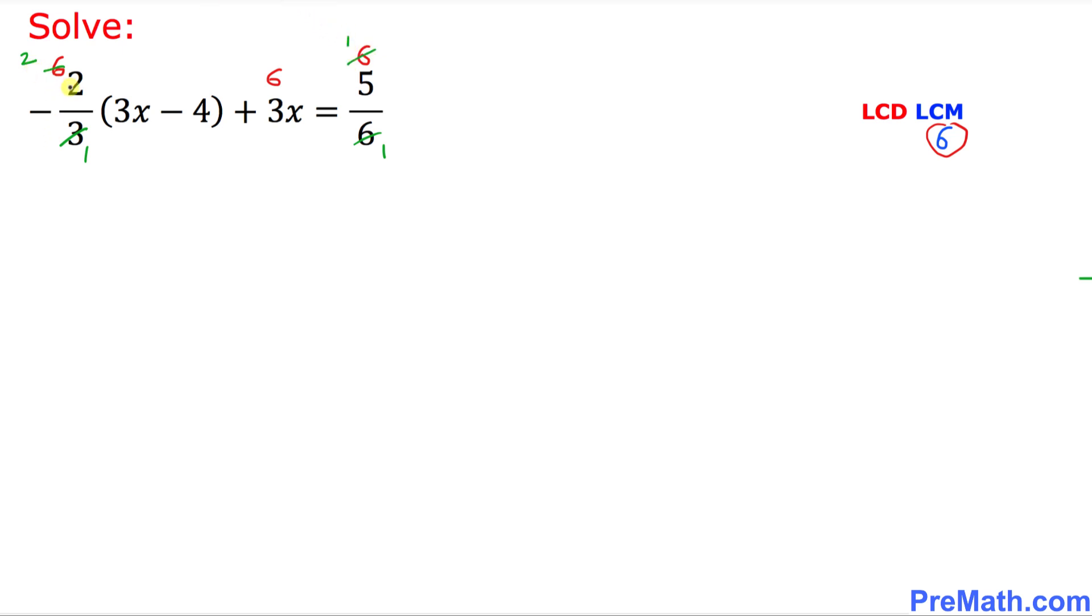2 times 2 is 4 with a negative sign. So that's going to become negative 4 times 3x minus 4 plus 3 times 6 is 18x equals to simply 5. See, wow, we got rid of these fractions.